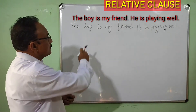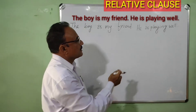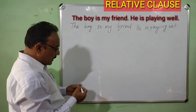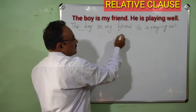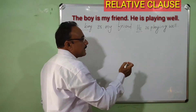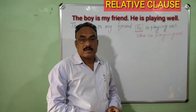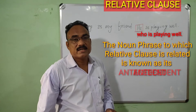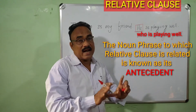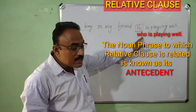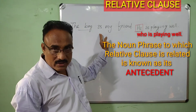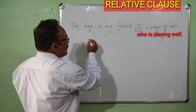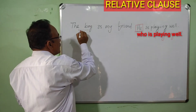Example: 'The boy is my friend.' Another sentence: 'He is playing well.' Here, 'the boy' is a noun, but 'he' is a pronoun. The pronoun is replaced by the relative word 'who.' The noun phrase to which a relative clause is related is known as its antecedent. So the relative clause is related to the noun phrase — that is the antecedent.